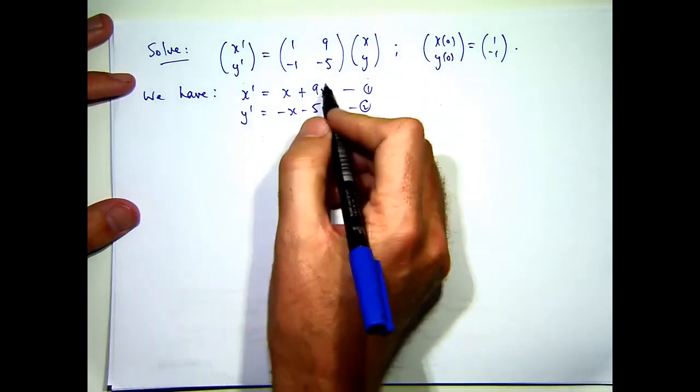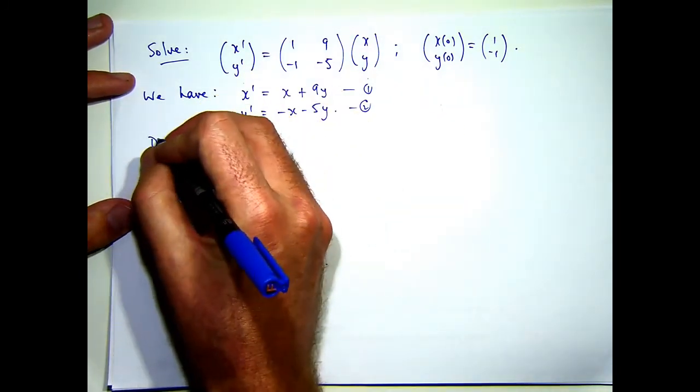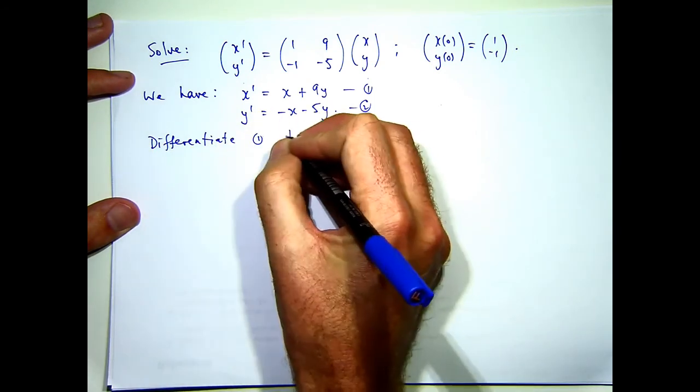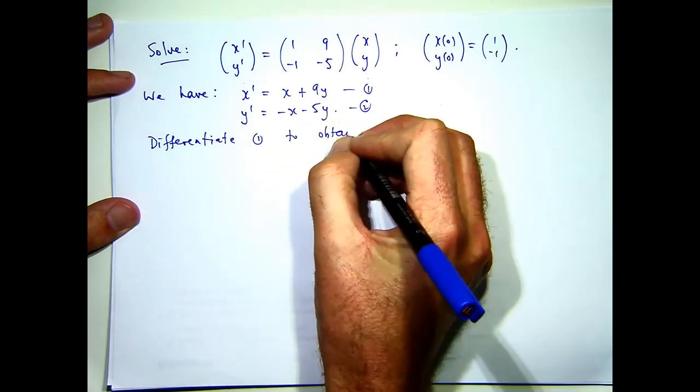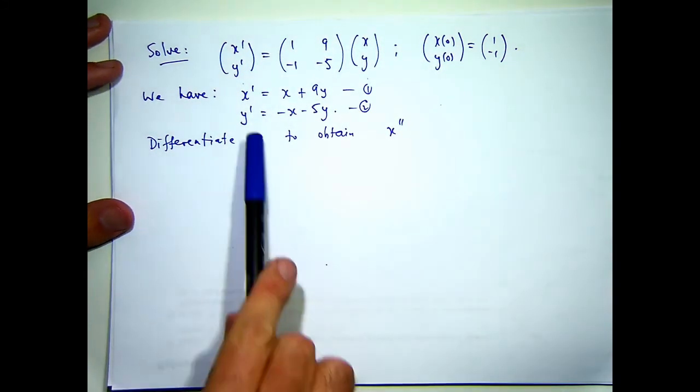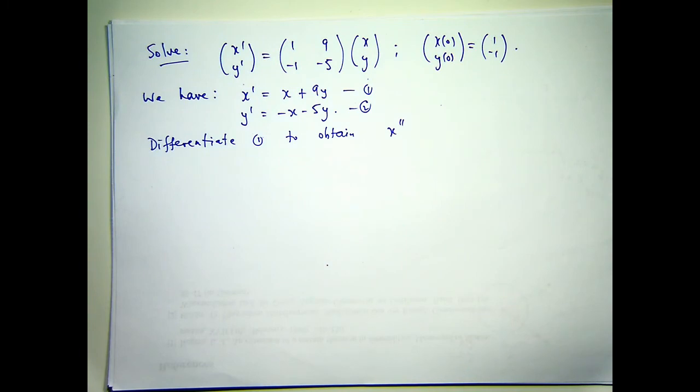So if we differentiate both sides of one, on the left-hand side, I'm going to get x double dash. By the dashes, I mean regular derivatives with respect to t, dx dt, dy dt.